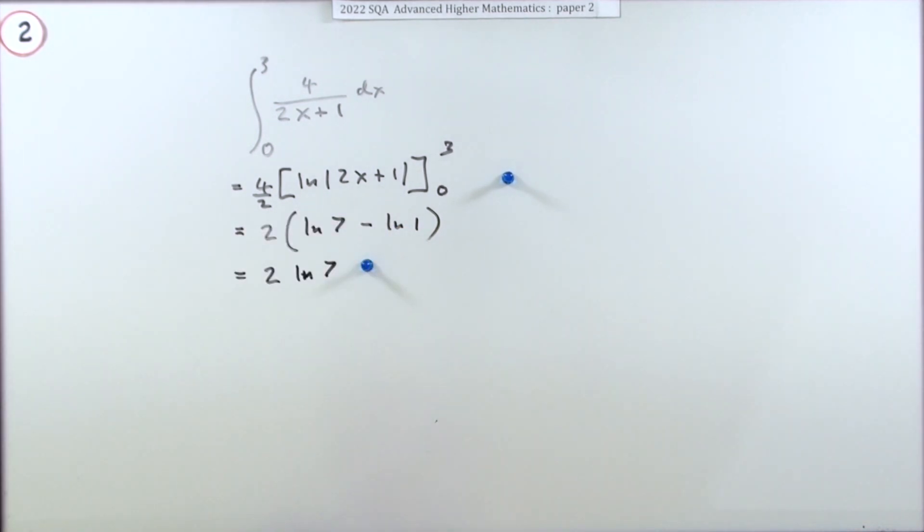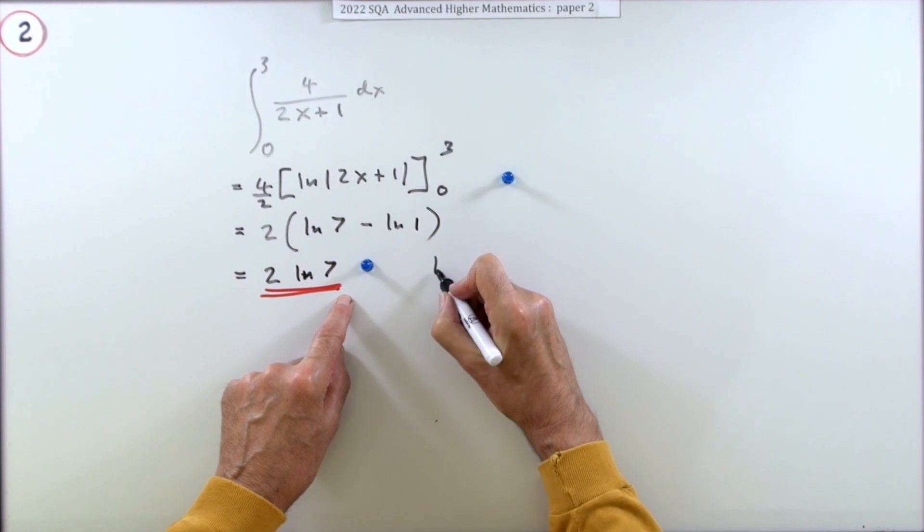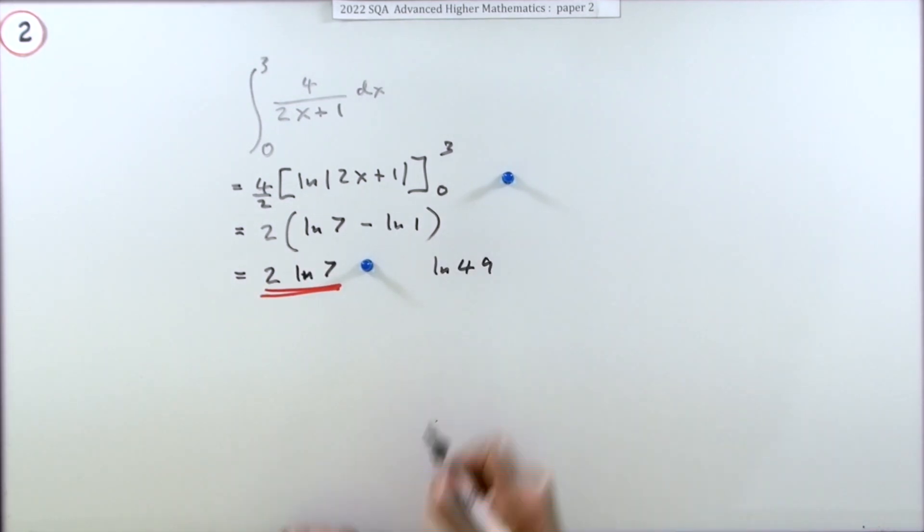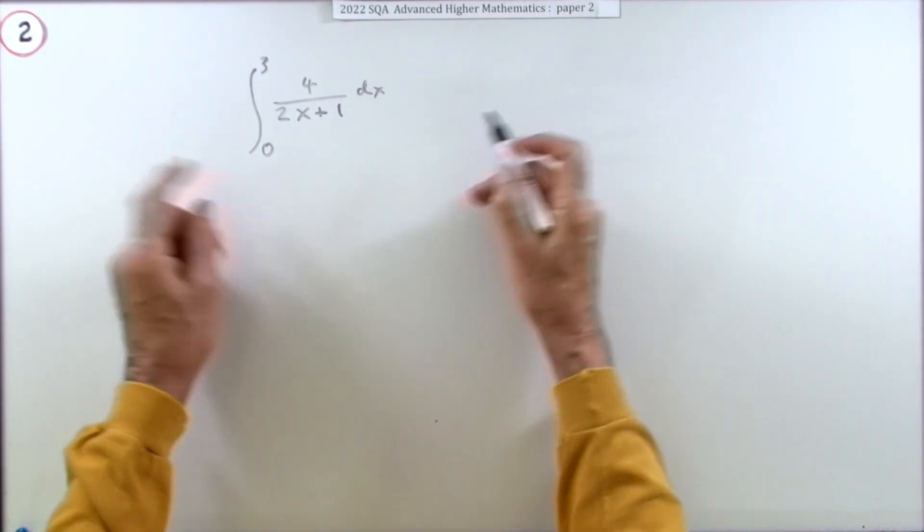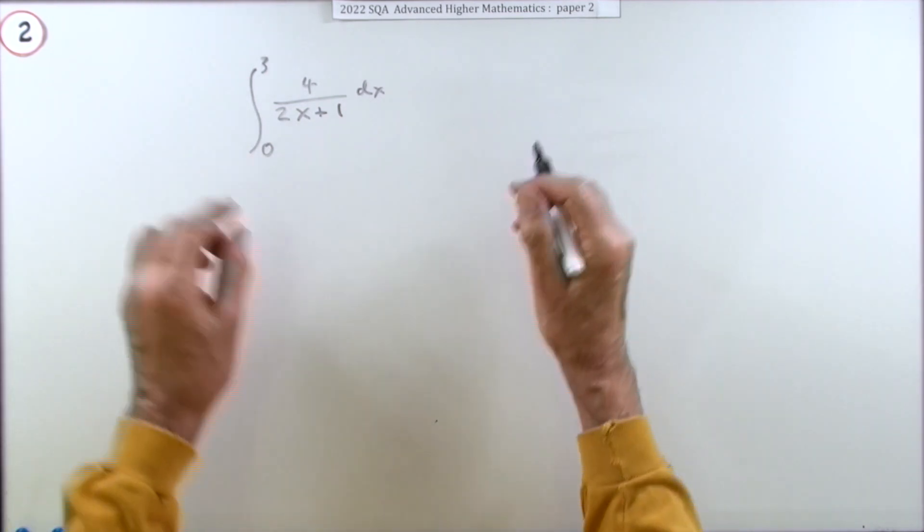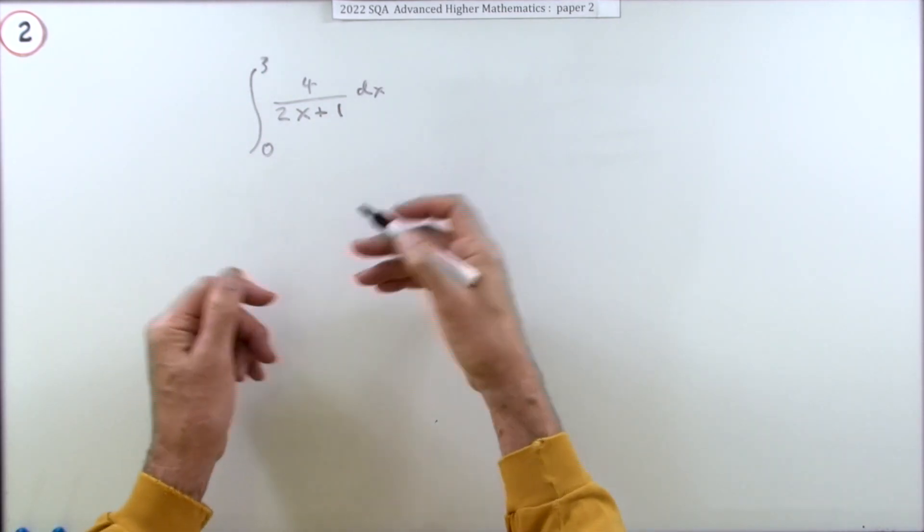So there's your final answer, unless of course you wanted to rewrite that as pop that power inside and make it log of 49, seven squared. But that will do. Now you may have thought well since it's the Advanced Higher maybe you have to use one of the fancy techniques rather than just using inspection.